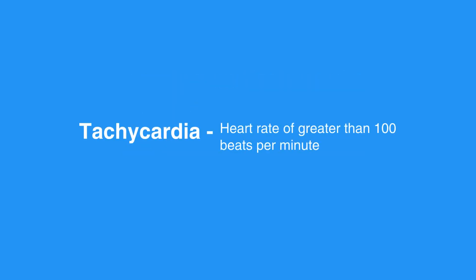Tachycardia is a heart rate of greater than 100 beats per minute. When the heart beats too quickly, there is a shortened relaxation phase. This causes two main problems: the ventricles are unable to fill completely, causing cardiac output to decrease, and the coronary arteries receive less blood, causing supply to the heart to decrease.